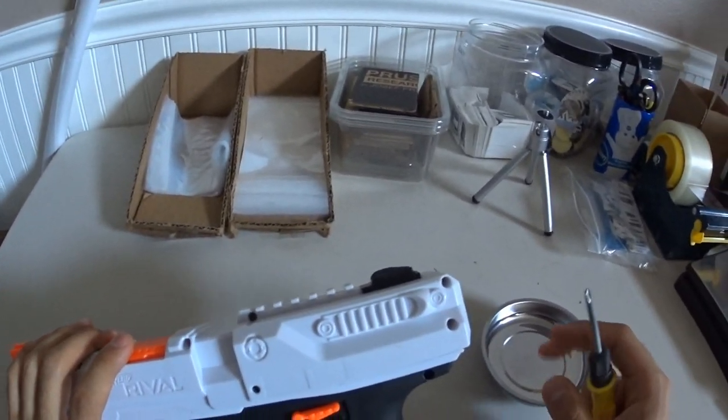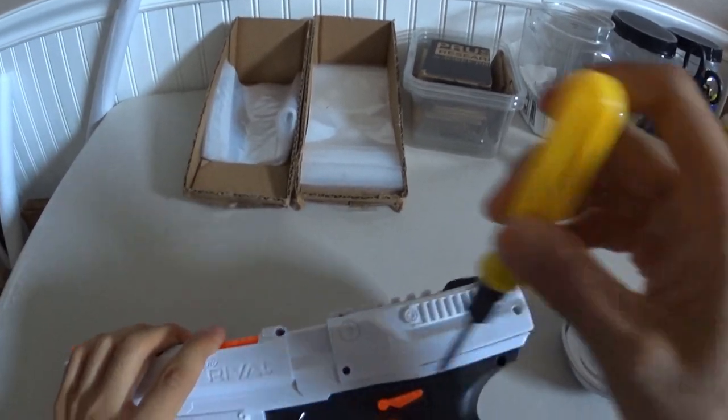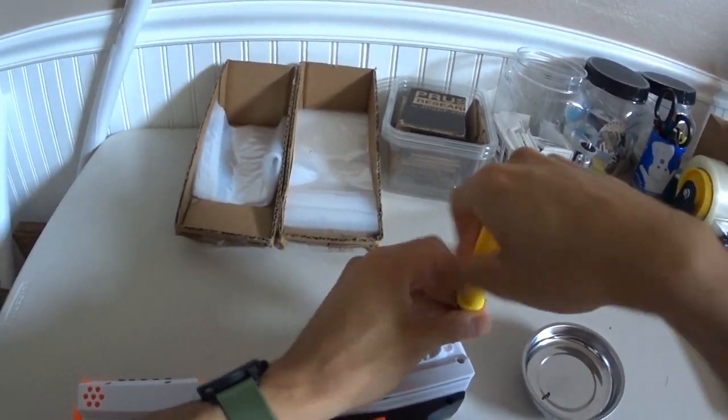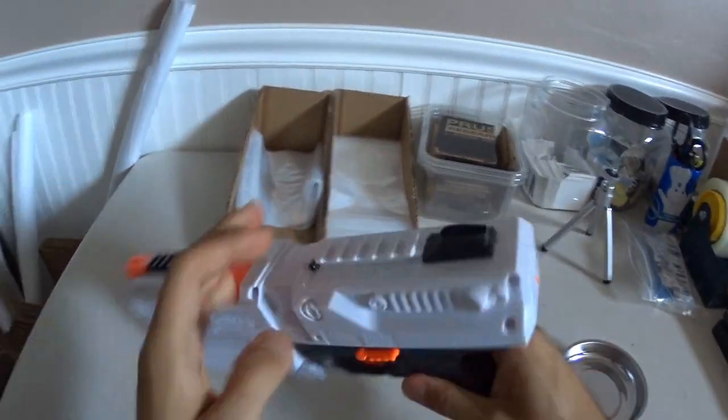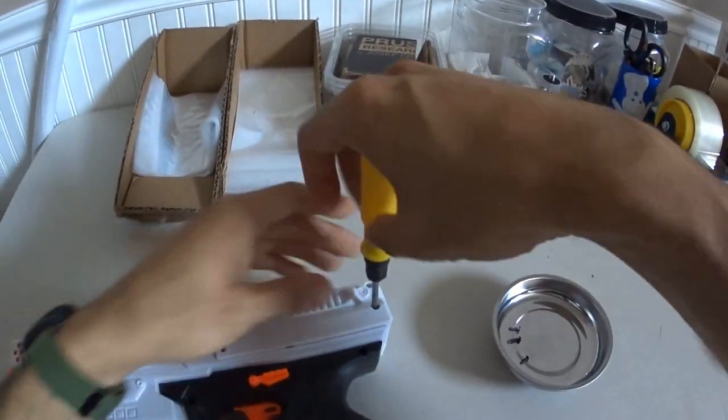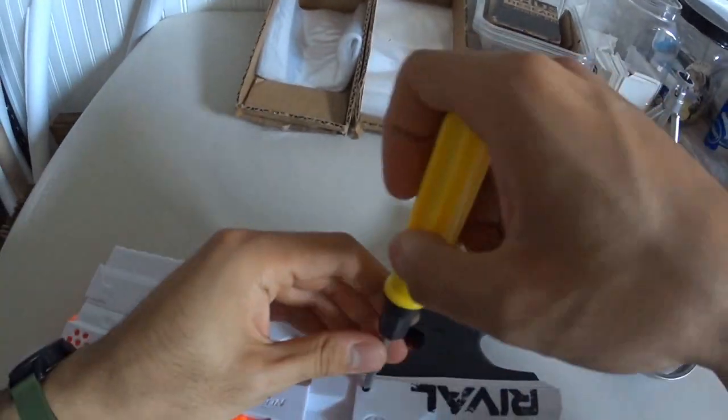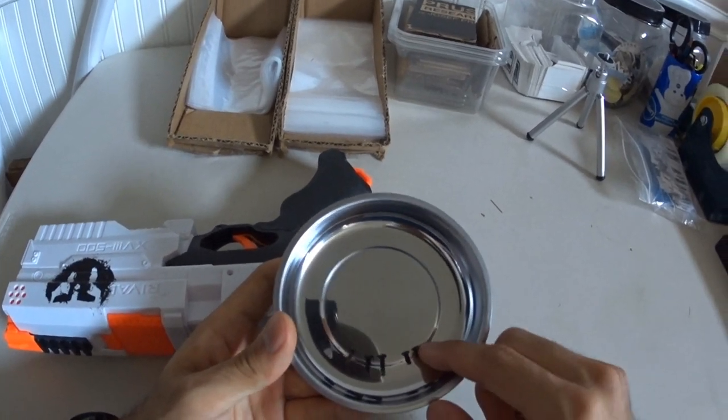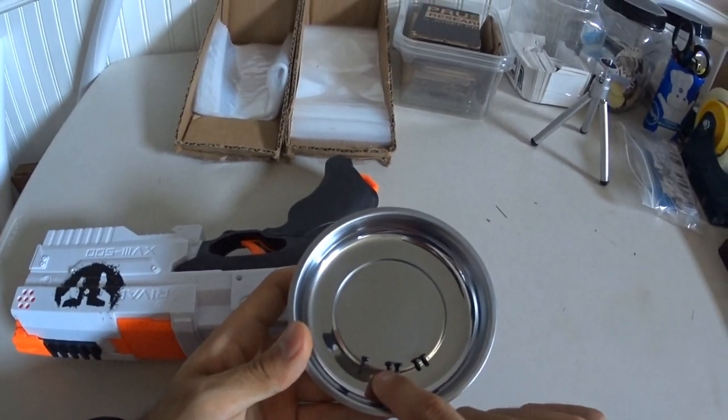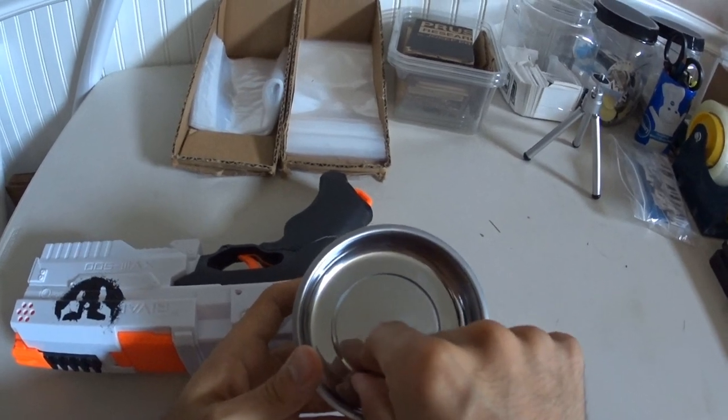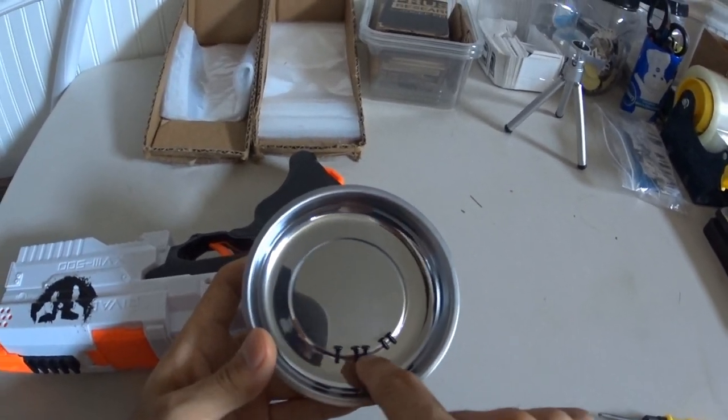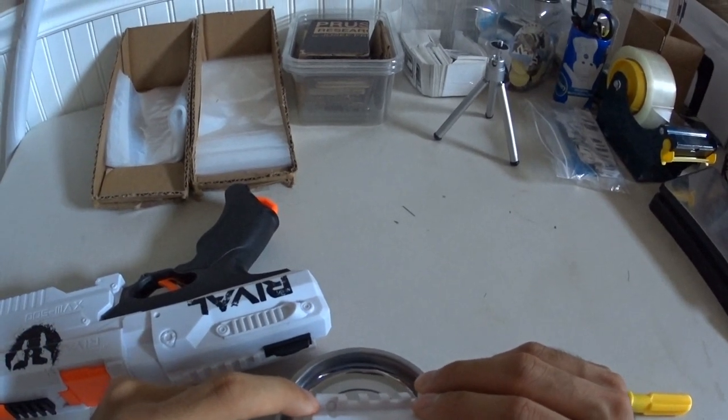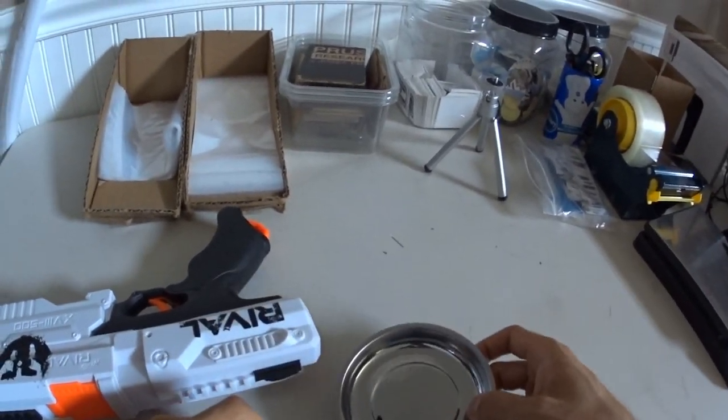So we're going to start by first disassembling the slide. So in the slide we have five screws, two short ones, two longer ones, and then this medium size one. This one's very slightly shorter than these two. This is the one that goes in the top rail slot here. So just remember that.